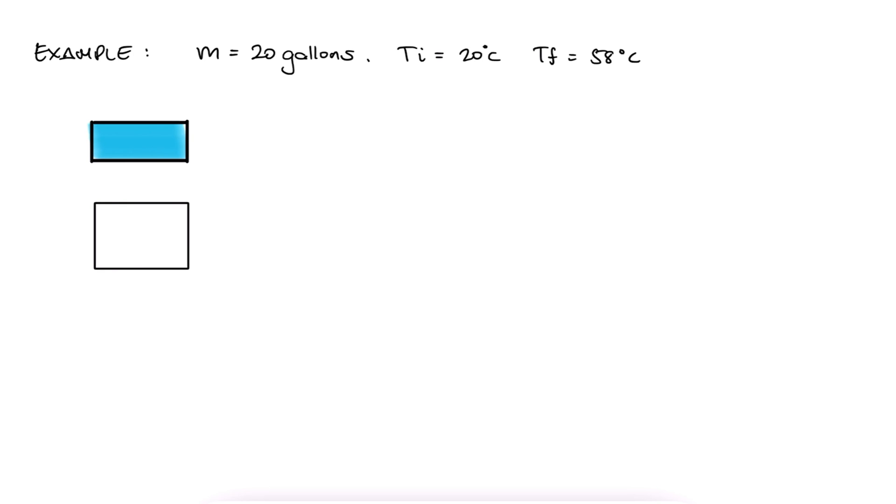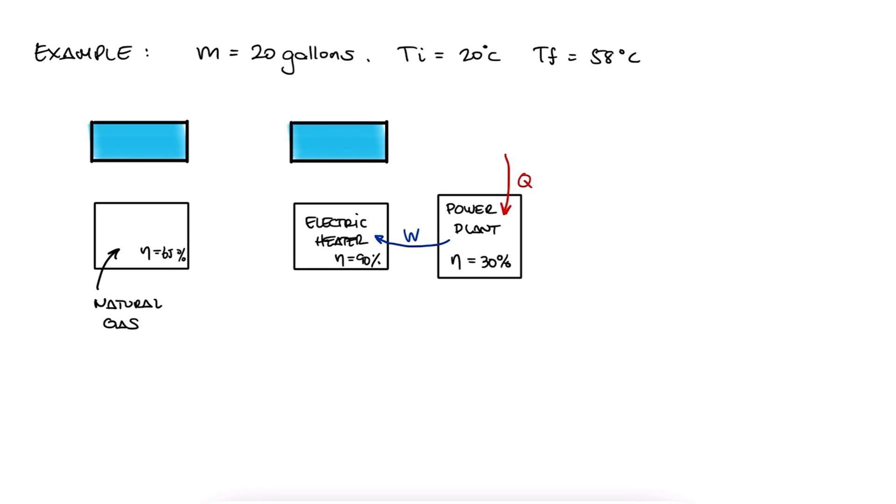Number one, a natural gas-based heater that has a 65% efficiency, and number two, an electric water heater that has an efficiency of 90%. Of course, that energy is coming from a power plant that has its own efficiency for transforming heat into electricity that operates on the basis of combusting natural gas with a higher efficiency of 80%, higher compared to our gas-based water heater at home.